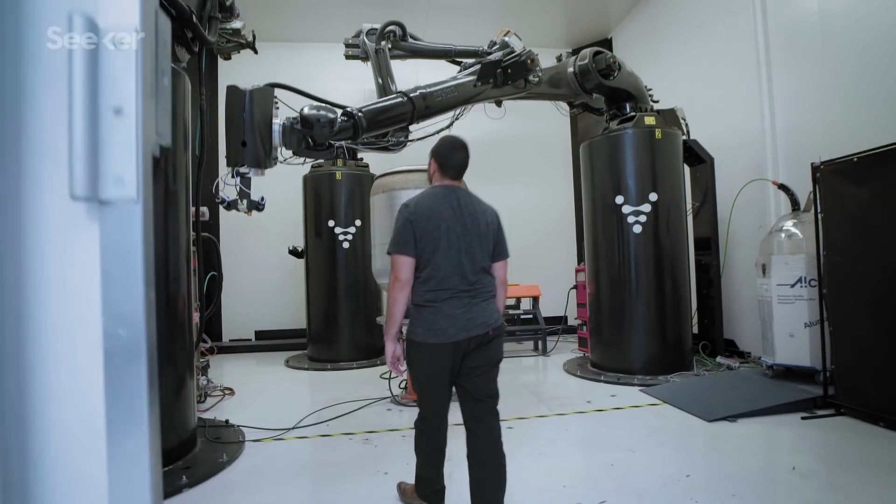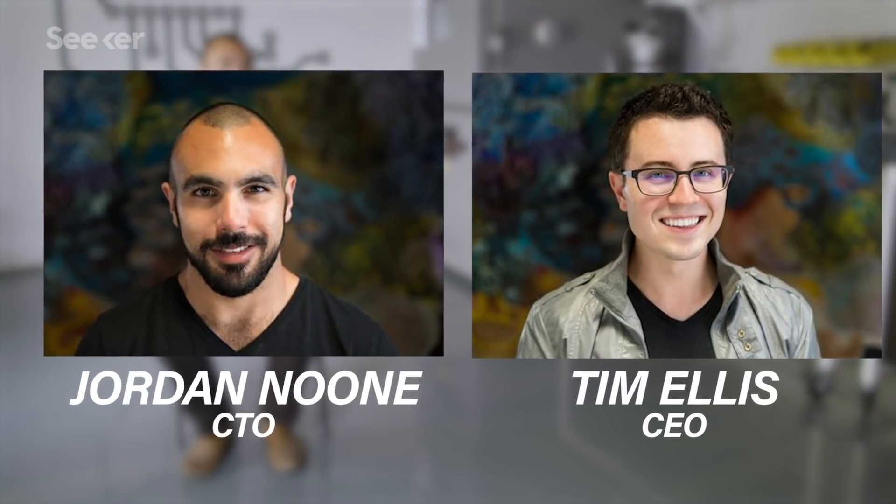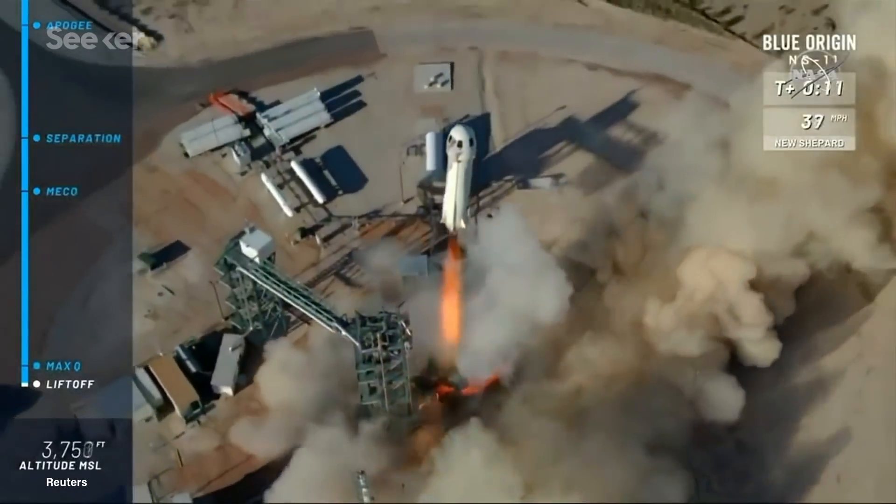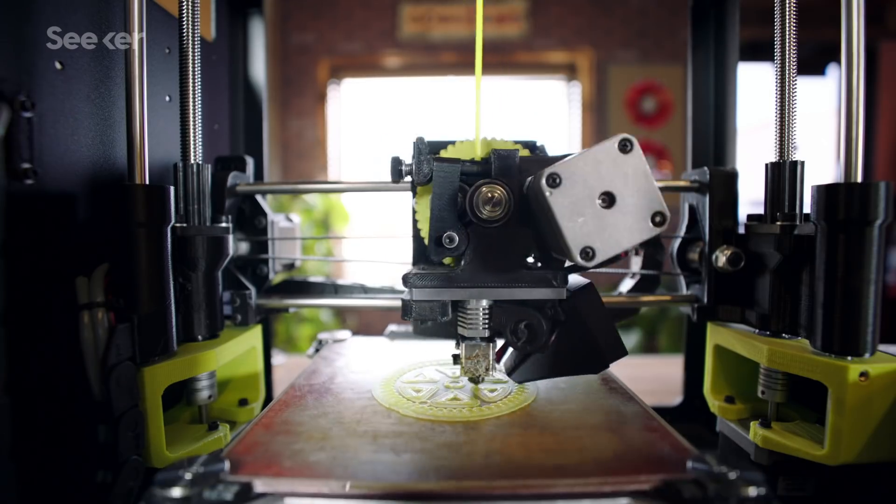We met up with one of their co-founders for a look inside their operations. My name is Jordan Noon, I'm co-founder and chief technology officer at Relativity. Me and Tim actually met when we were students. We've known each other almost 10 years now. He graduated, went to Blue Origin, I graduated, went to SpaceX. Both Tim and I saw the promise of 3D printing and we wanted to see the advantage of that applied to an entire rocket.